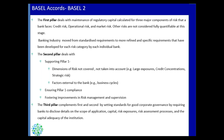The first pillar is about capital regulations and minimum capital requirements, including all three kinds of risk: credit risk, operational risk, and market risk. Because of Basel 2, the banking industry moved to more refined and specific requirements that banks must fulfill for submission to regulators.